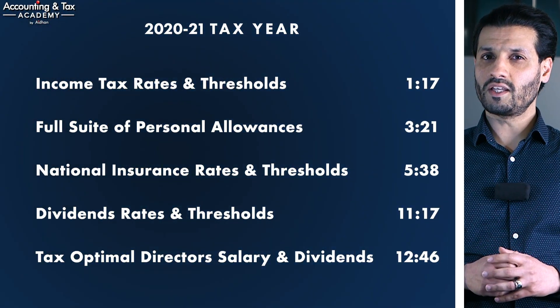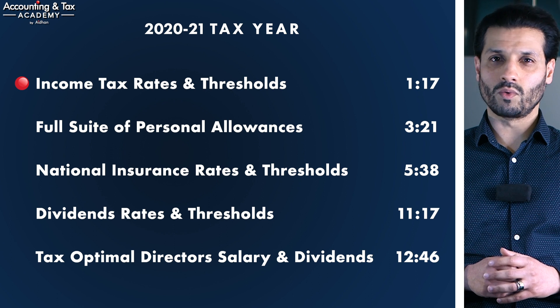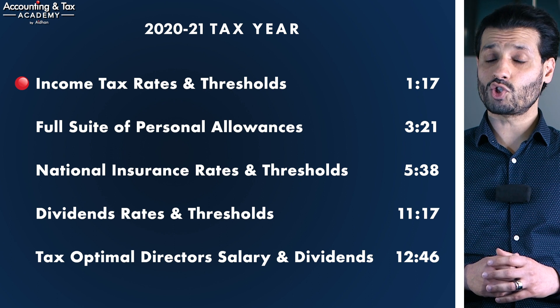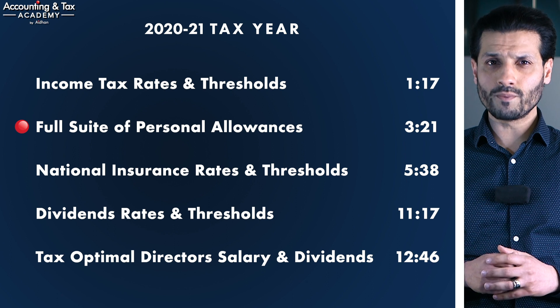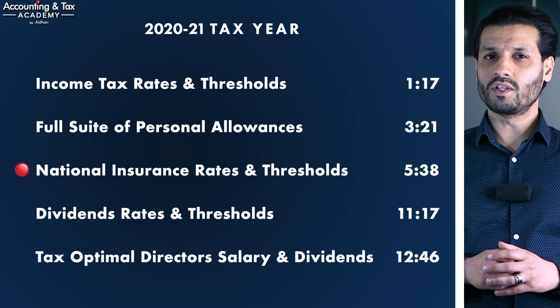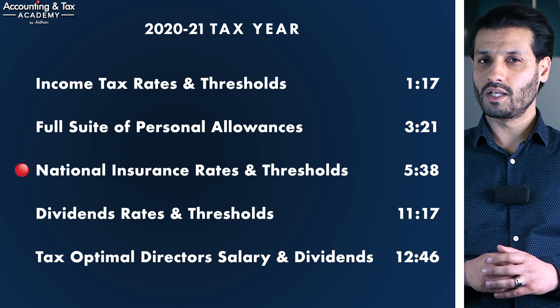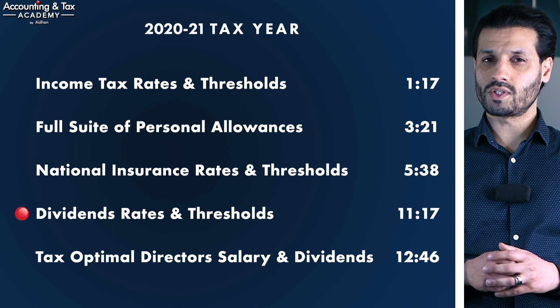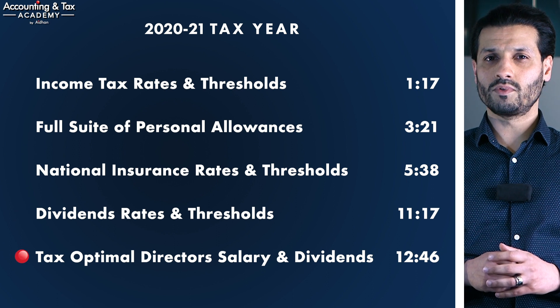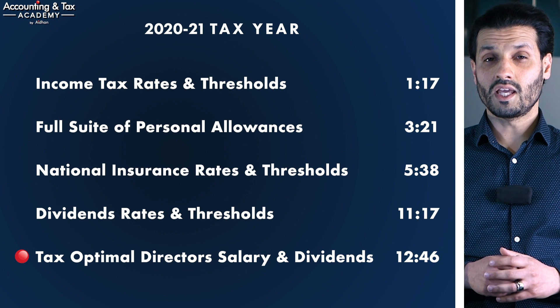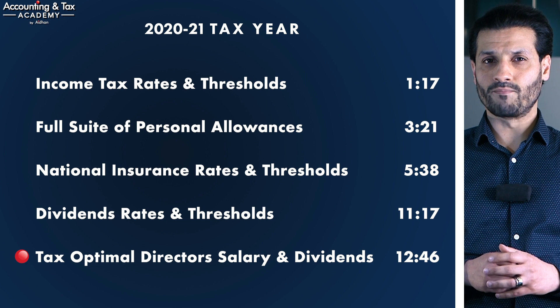In this part two of our UK Budget 2021 special series, we are going to do a deep dive into the income tax rates and thresholds for the 21-22 tax year, the full suite of personal allowances available to you, national insurance rates and thresholds, dividend rates and thresholds, and finally helping you decide a tax optimal director salary and dividends in the 21-22 tax year.